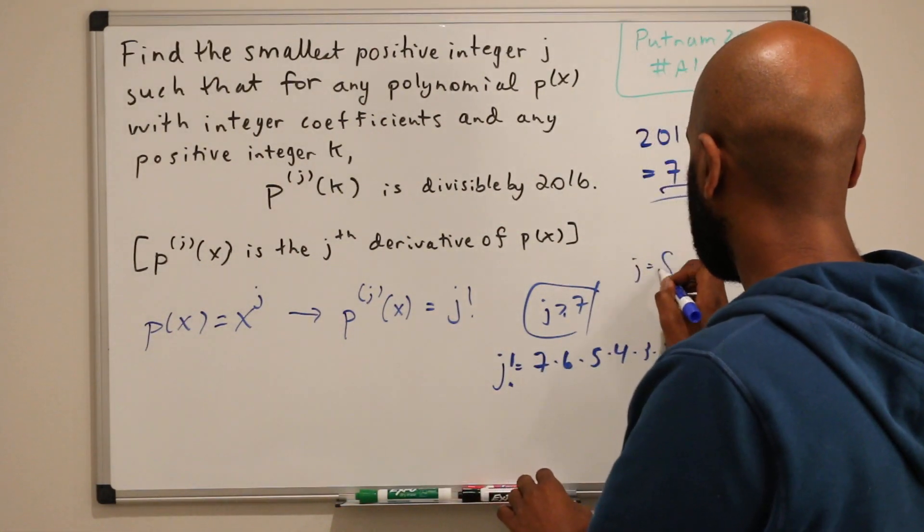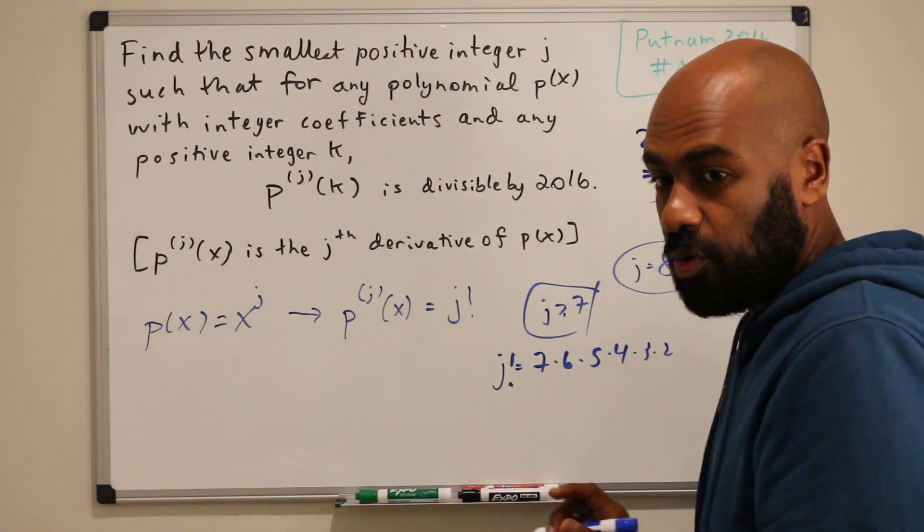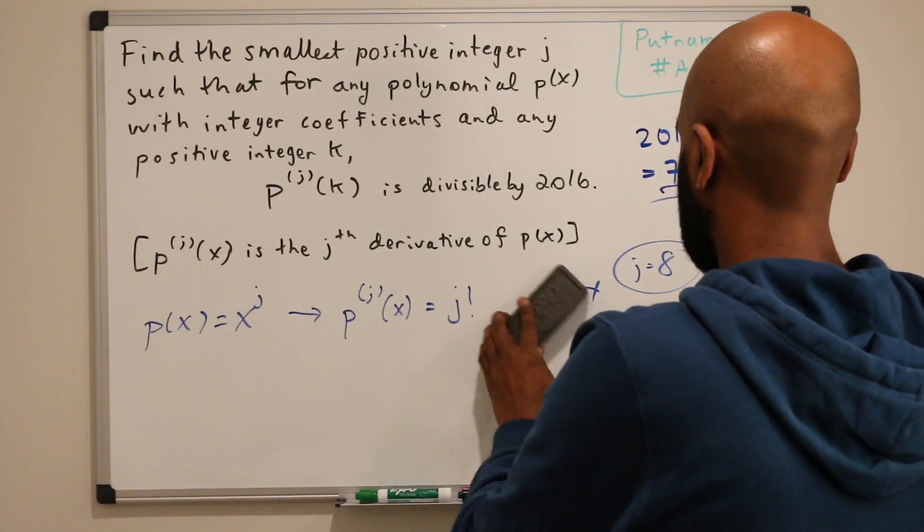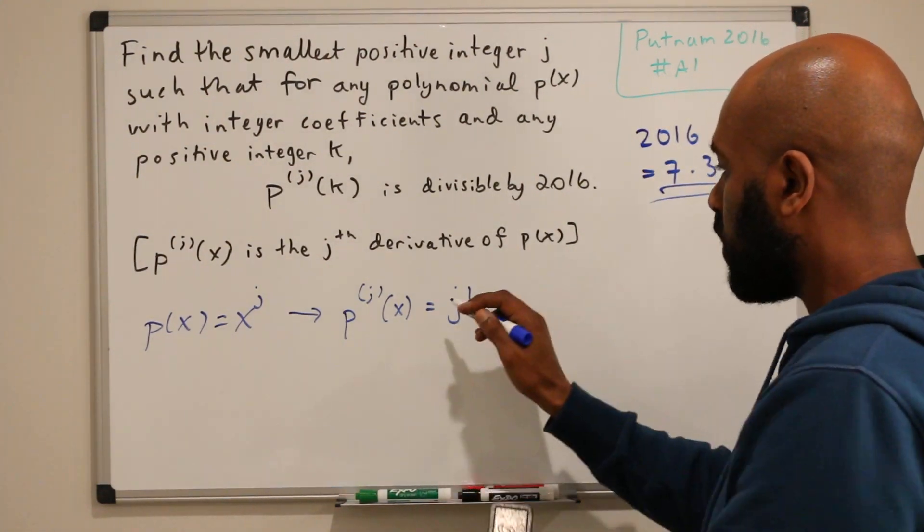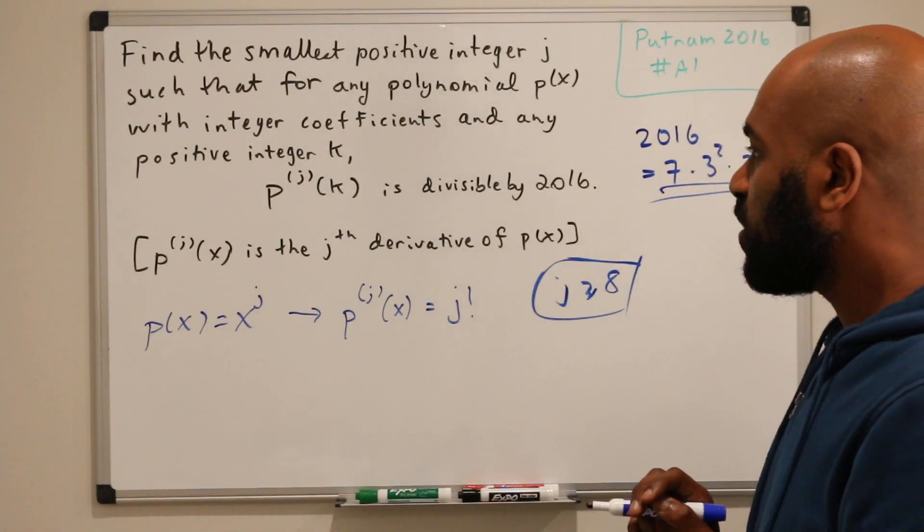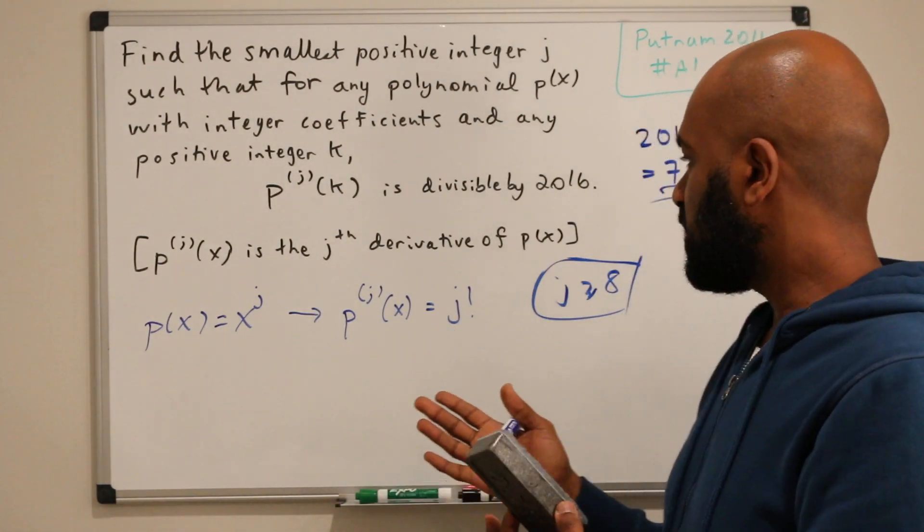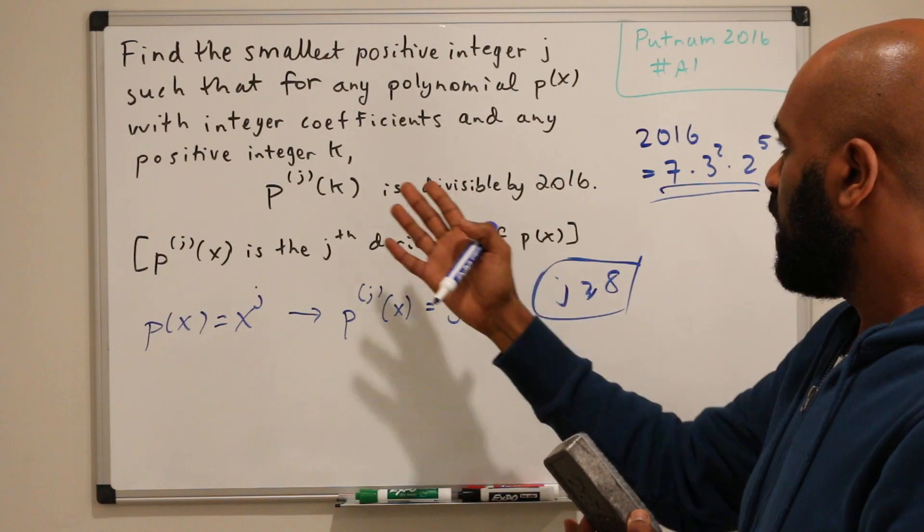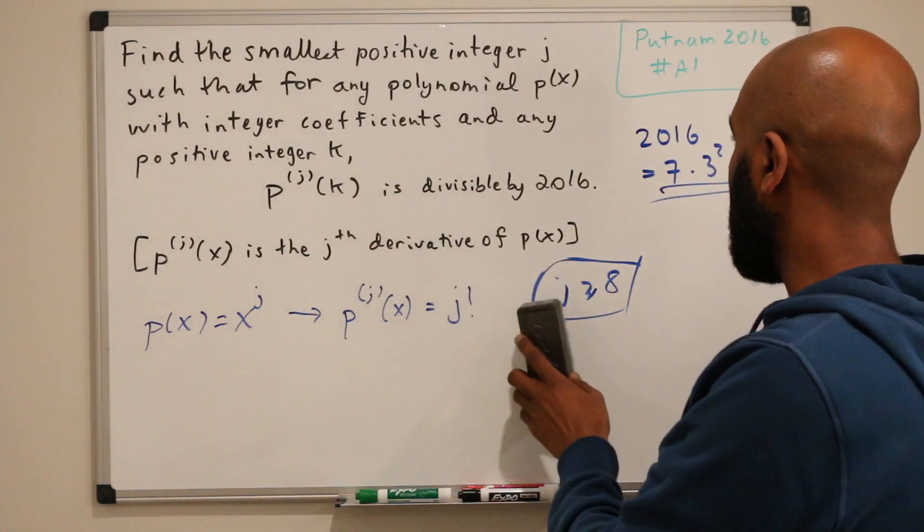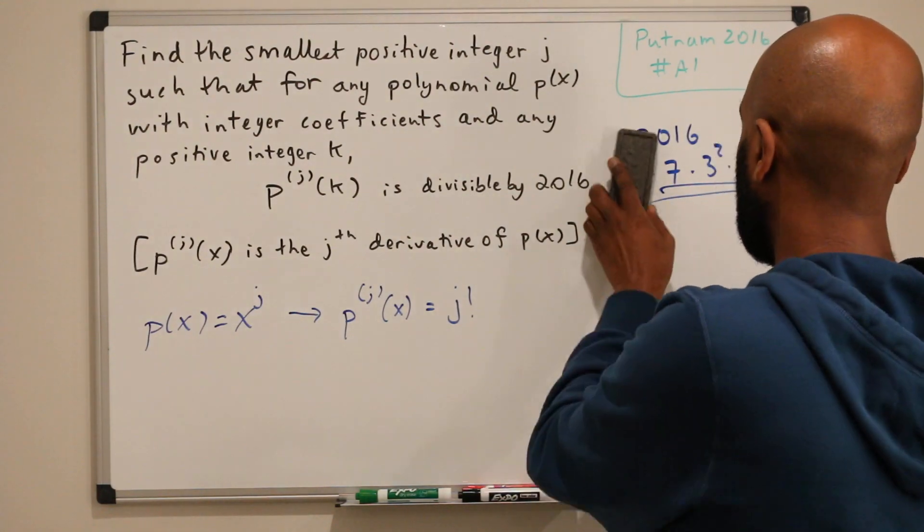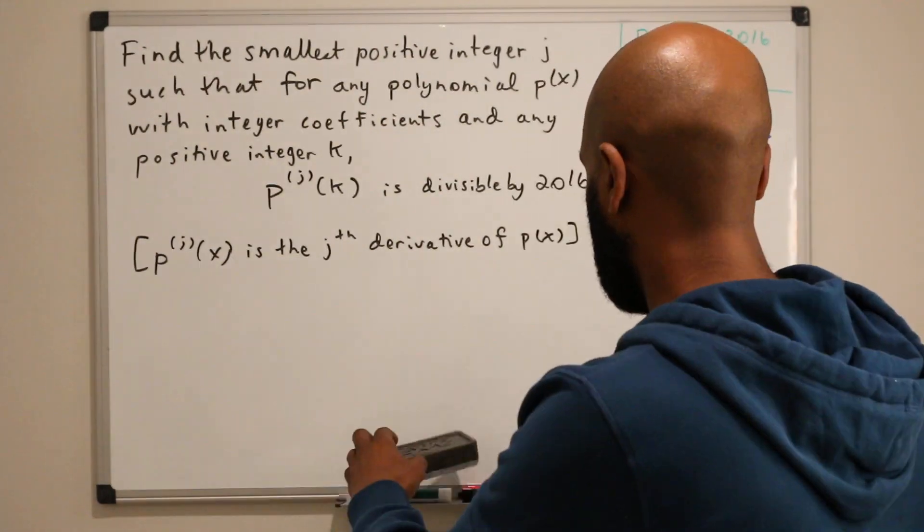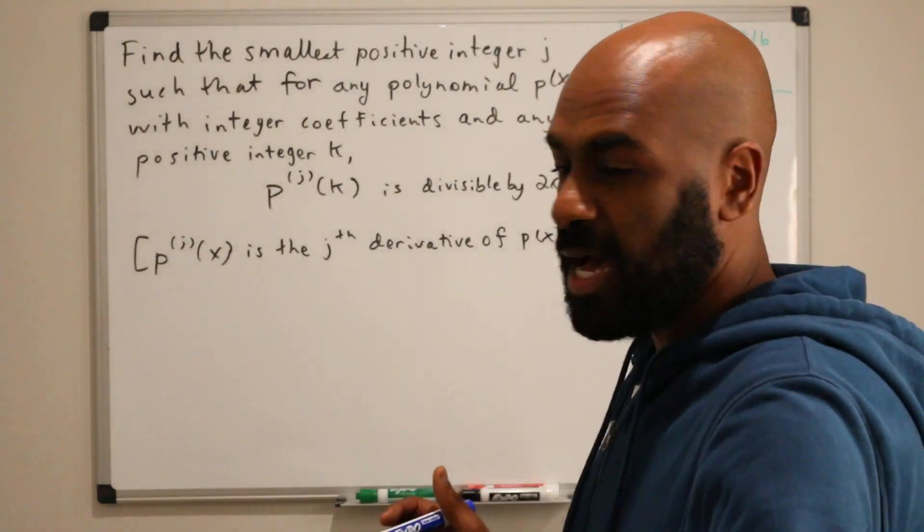We need to increase by 1 more. If we make j equal to 8, we'll be good. So from this, j has to at least be 8 in order for this one function to work. So let's look at a generic polynomial and see what happens when we take its jth derivative and see if this 8 is going to be enough. If it is, then we're happy. It's the smallest positive integer that will work for all our functions.